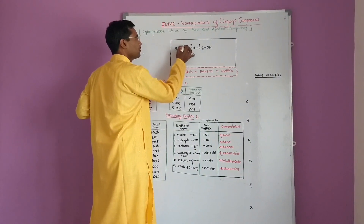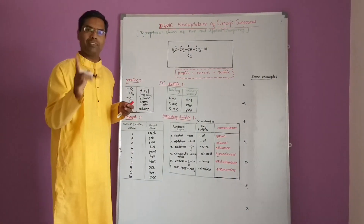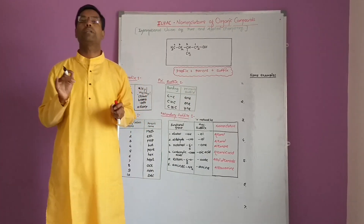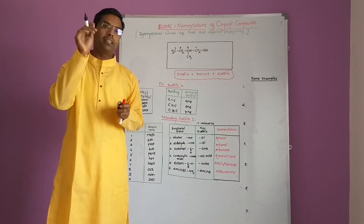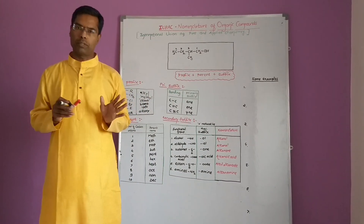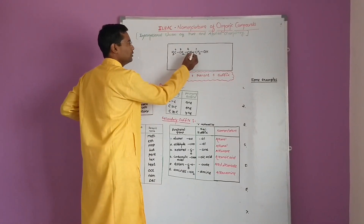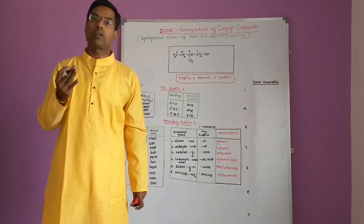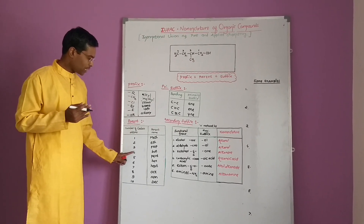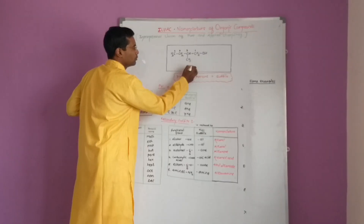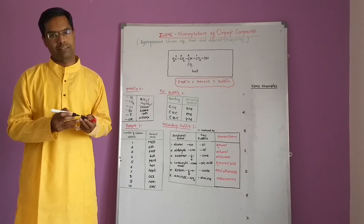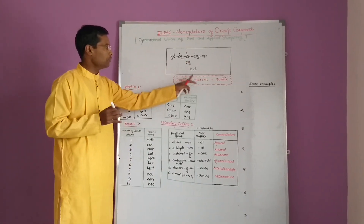The longest carbon chain is numbered such that the carbon atom to which the functional group is attached receives the lowest positional number — here it is one. Counting: one, two, three, four. There are four carbon atoms in our selected longest chain, so the parent name is 'but', based on the number of carbon atoms. Since our longest chain consists of four carbon atoms, the parent name is 'but'.